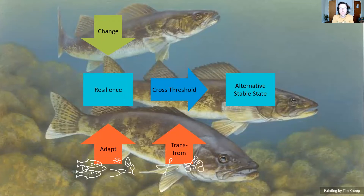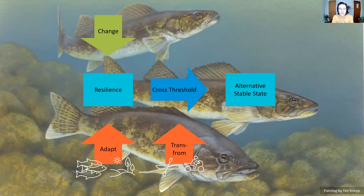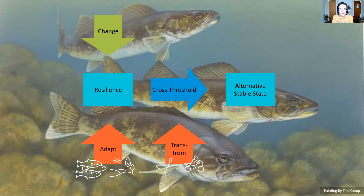The second thing you can do as an organization is transformation. Transformation happens when you expect to cross the threshold, or you have crossed the threshold, and the system has changed, so you decide as an organization to transform to match that change. If there aren't any more walleye in the lake and that's what people used to come for, maybe you promote new uses like kayaking. Or if businesses have relied on fishers and anglers and they're no longer coming to the area, maybe you promote the area to ATV users to bring a new group of people to support the businesses. Those are examples of adaptations to increase resilience and transformations to match changes in the system.